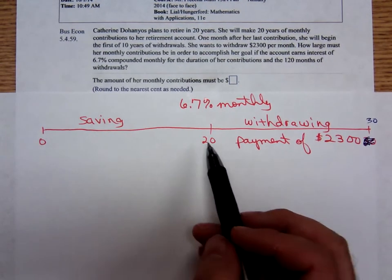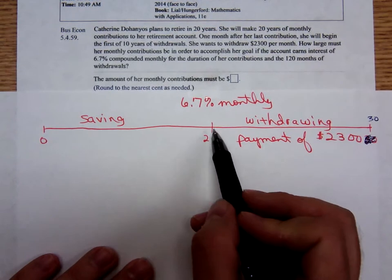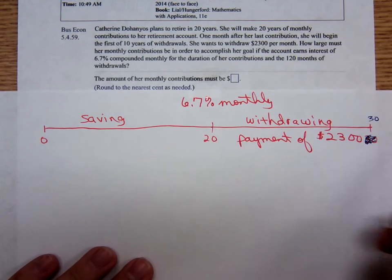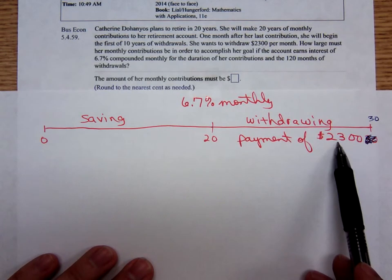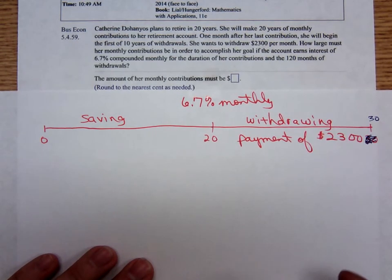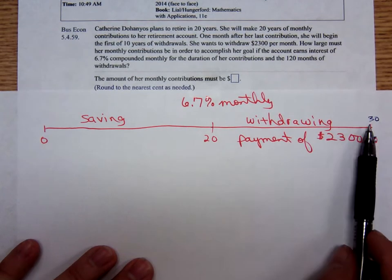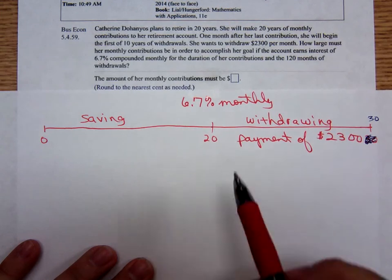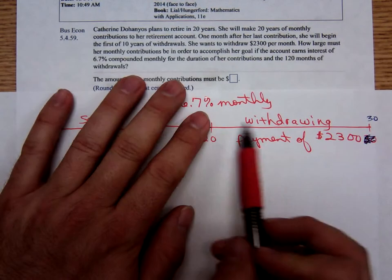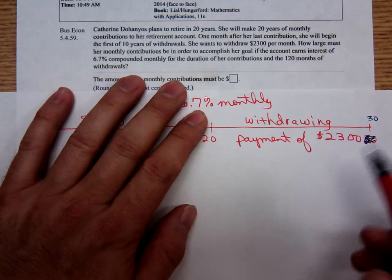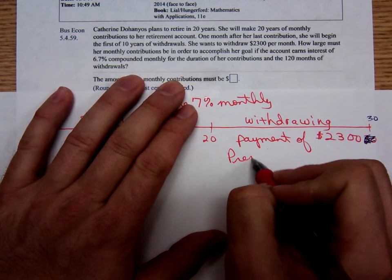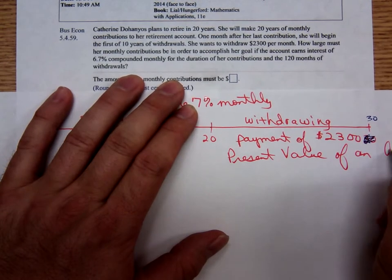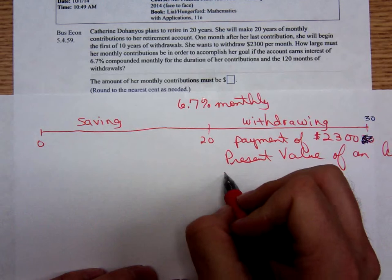Here when we look just at this last 10 years, she needs to have a lump sum right there in her account. Let's work with this last 10 years because that's what we know more about. We know the amount of the periodic payments she wants. This is the present value of an annuity because the lump sum occurs at the beginning of the 10 year time span. And we know that formula.